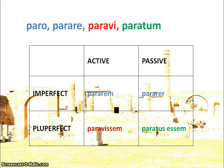From the colour coordination we can see that the imperfect subjunctive is formed from the second principal part. It is our present active infinitive followed by personal endings — active personal endings for the active, and passive endings for the imperfect passive subjunctive.